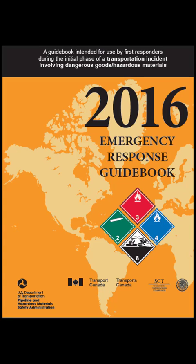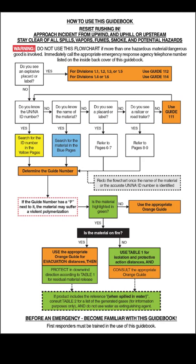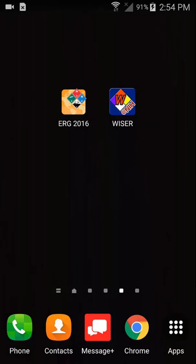The Emergency Response Guidebook, known as the ERG 2016, provides information for first responders during the critical initial phase of a dangerous goods or hazardous material incident. This tutorial is based on the 'How to Use This Guidebook' flowchart located on page 1 of the current print version of the ERG. Let's get started with an overview of the Android version.